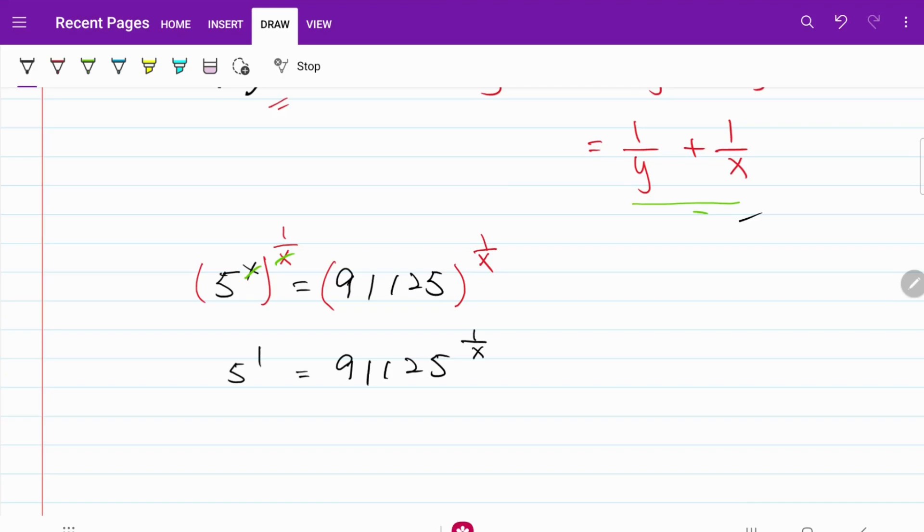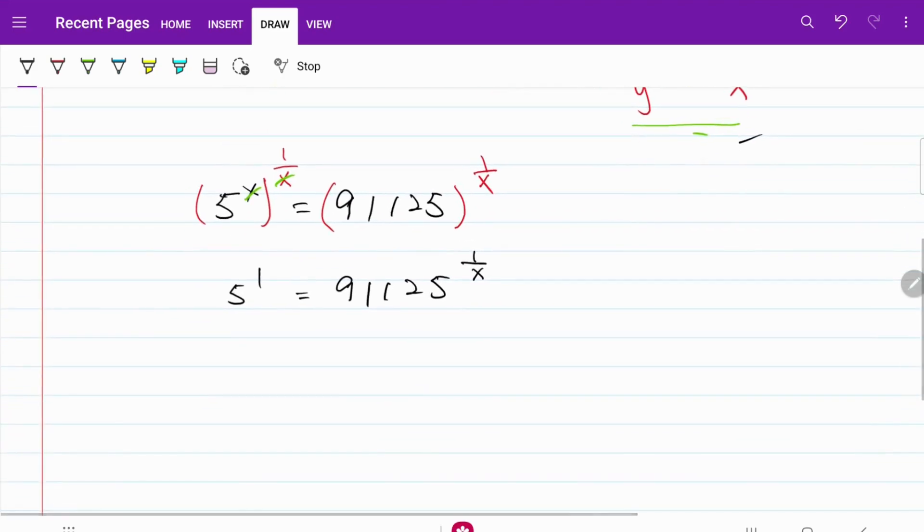So now we are going to do the same thing with y. I have 9 to the power of y is equal to 91,125. Using the exact same trick, I'm going to raise this to the power of 1 over y. Same thing on the right hand side.